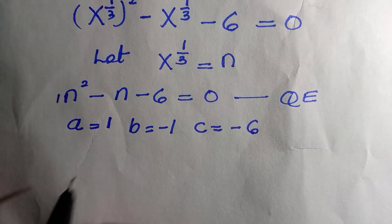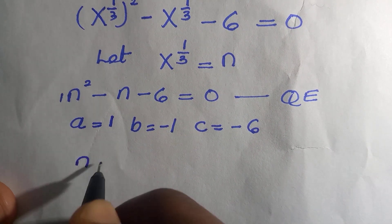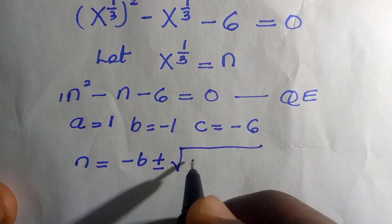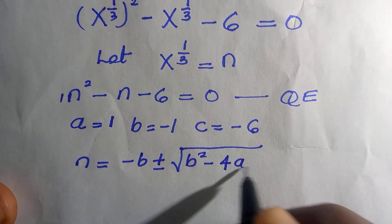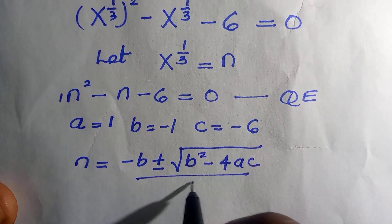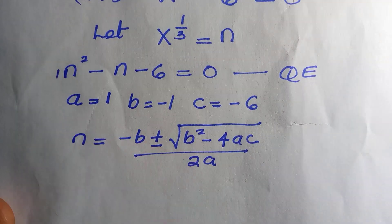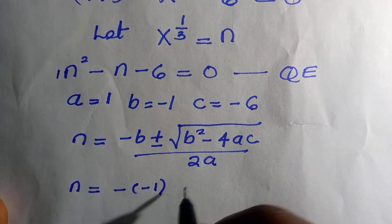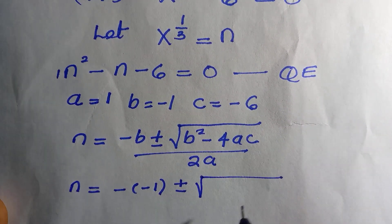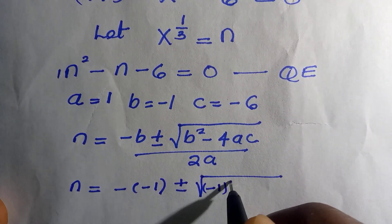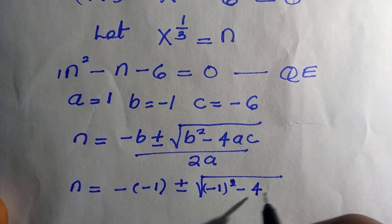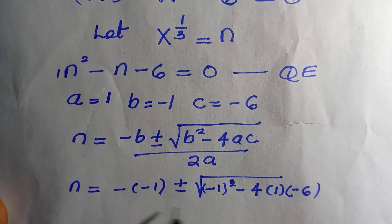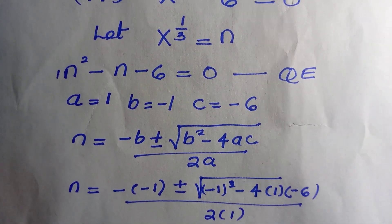We write the quadratic formula: n equals negative b plus or minus the square root of b squared minus four ac, all divided by two a. We are going to insert all the parameters into this equation. So n equals negative of negative one, plus or minus the square root of bracket negative one squared minus four times bracket one times negative six, all divided by two times one.